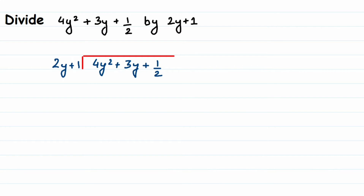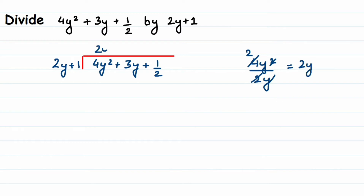Again, find the first quotient term by dividing the first term of the dividend by the first term of the divisor: 4y squared divided by 2y. We can cancel 4 and 2 to get 2, and cancel one y, giving us 2y. Write down 2y in the quotient. Now multiply 2y plus 1 by 2y: 2y times 2y is 4y squared, and 1 times 2y is 2y.